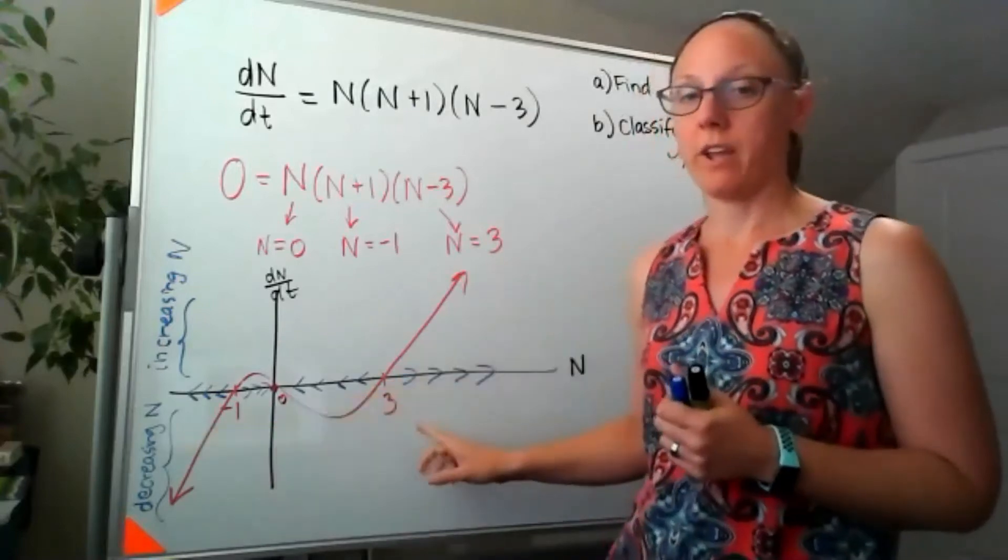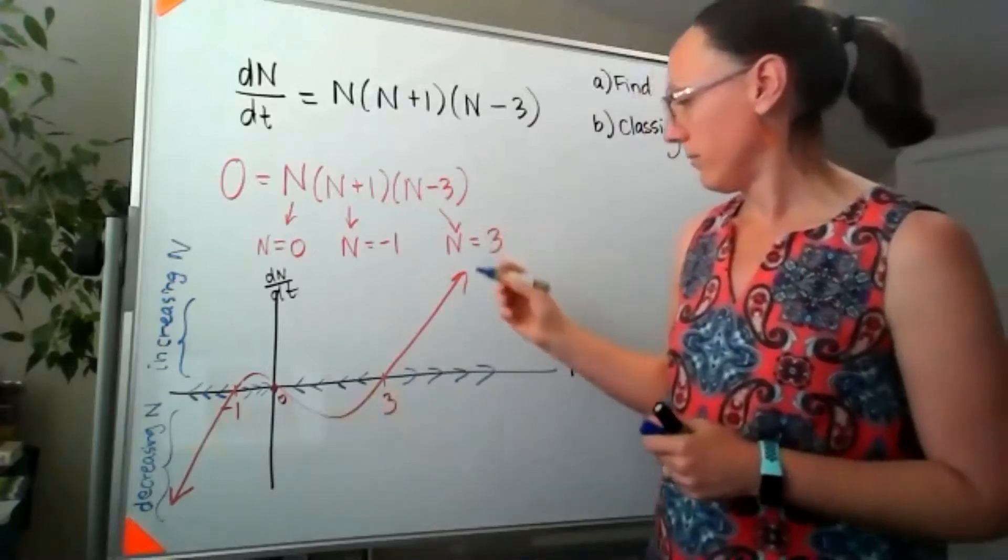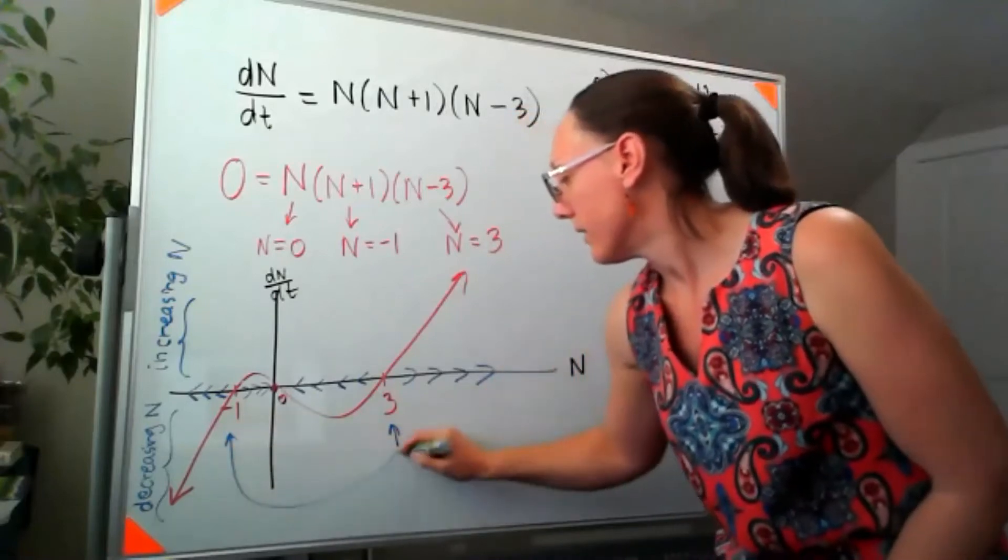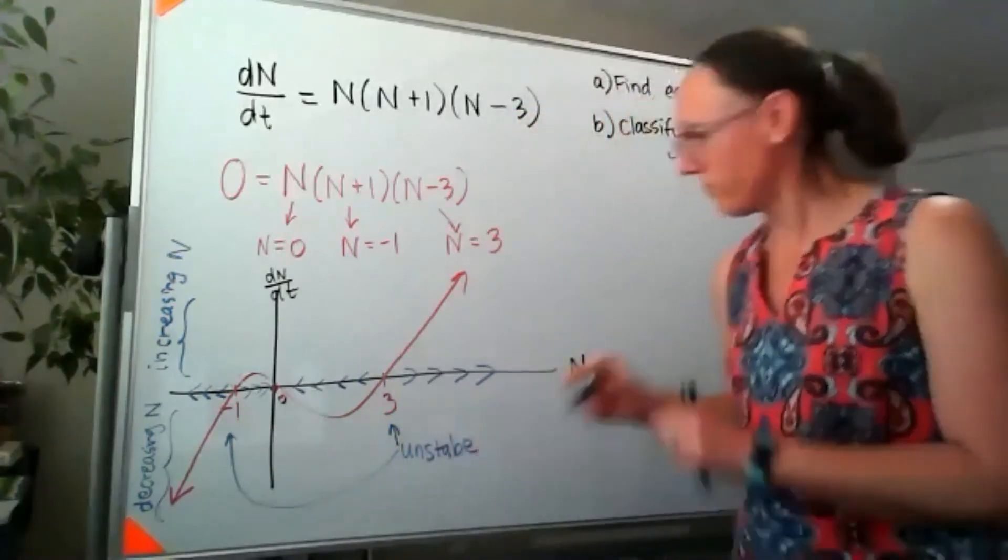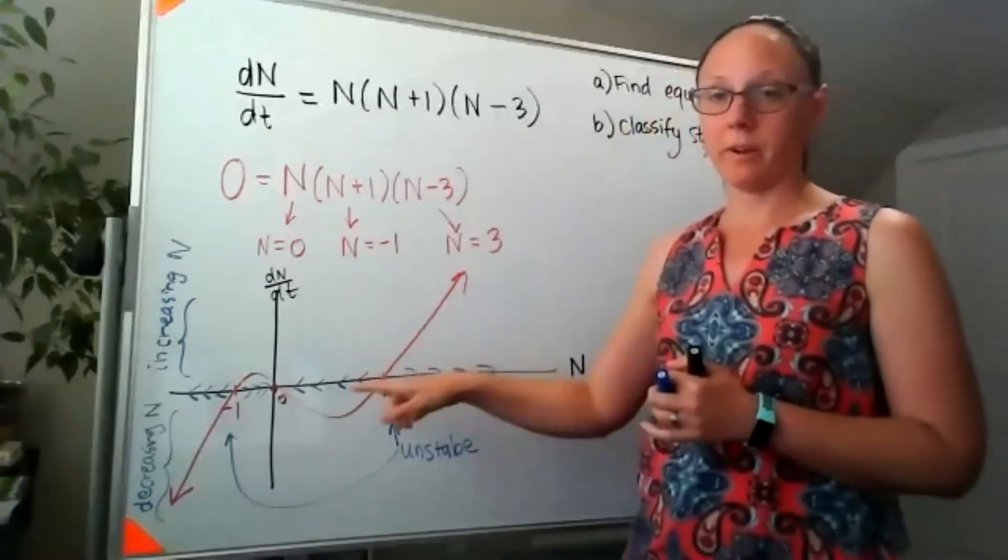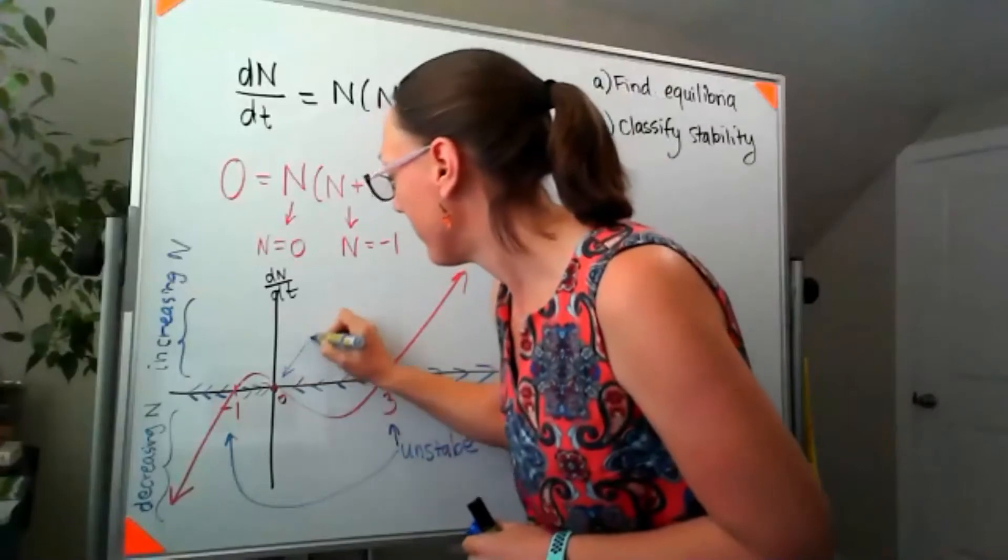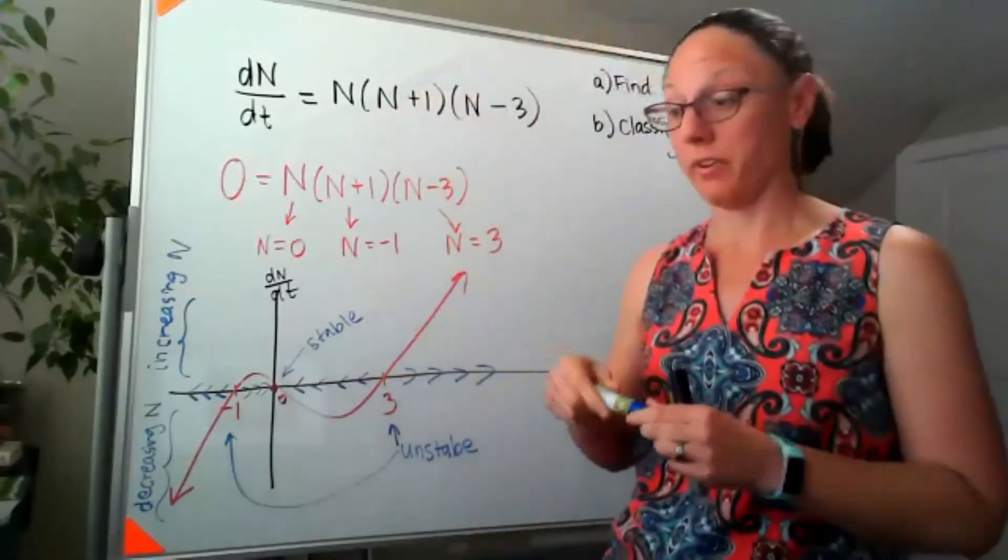So negative one and three are both unstable. Unstable. And the equilibrium of zero looks like it's stable, because all of those arrows are moving towards it.